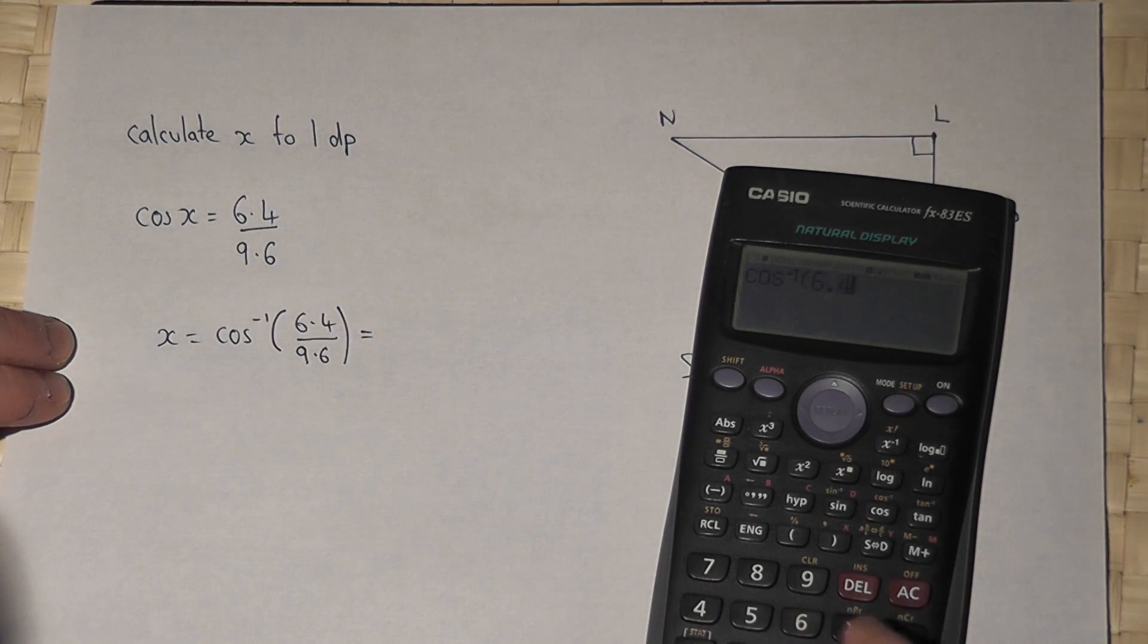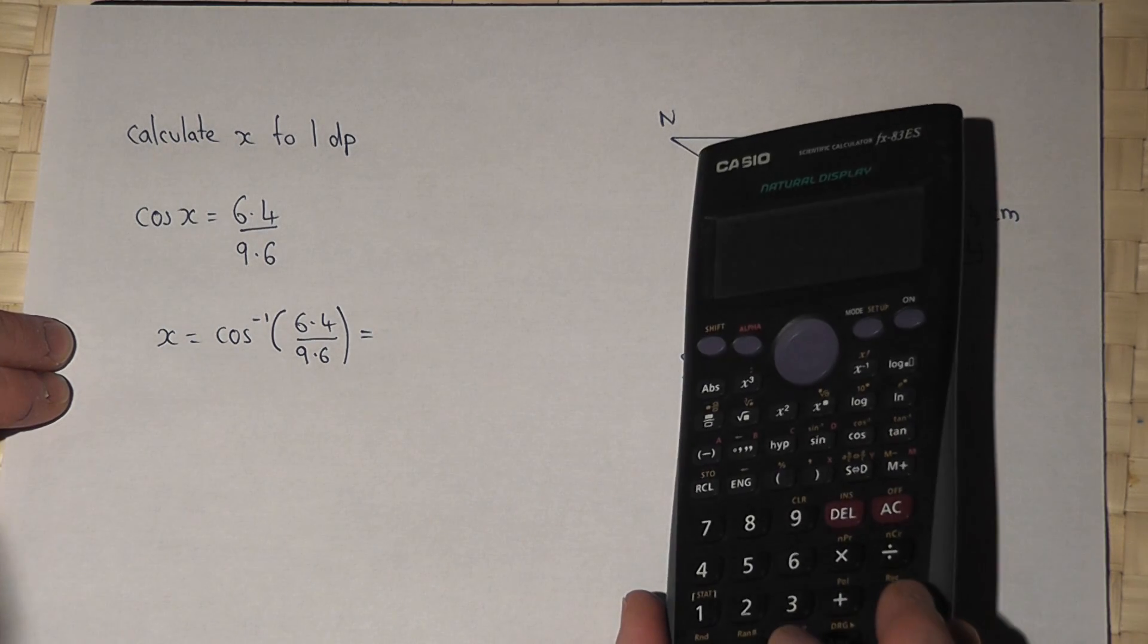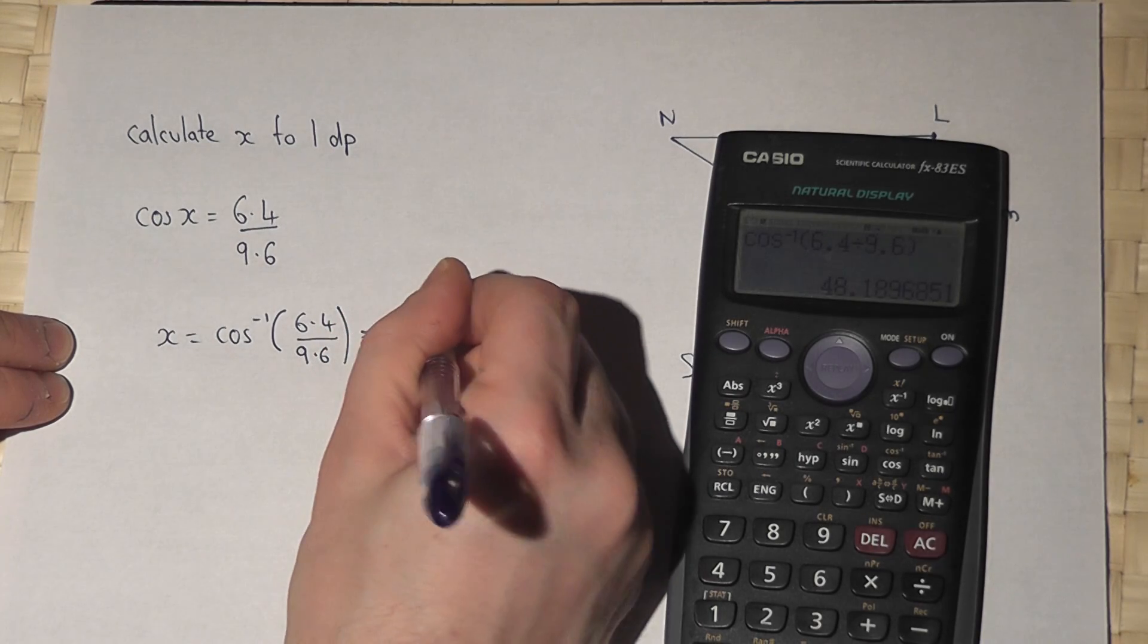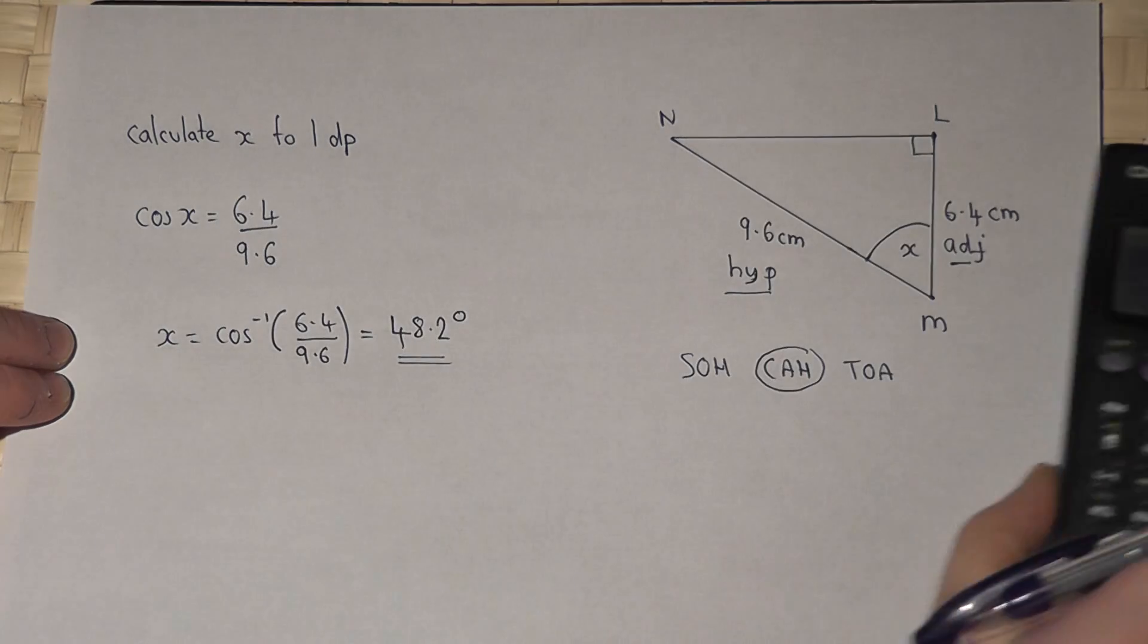So if I put in 6.4 divided by 9.6 and press enter, it gives me 48.2 degrees to one decimal place.